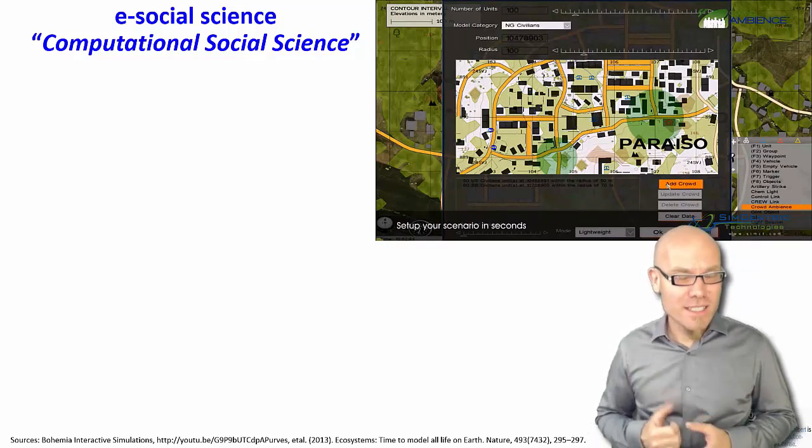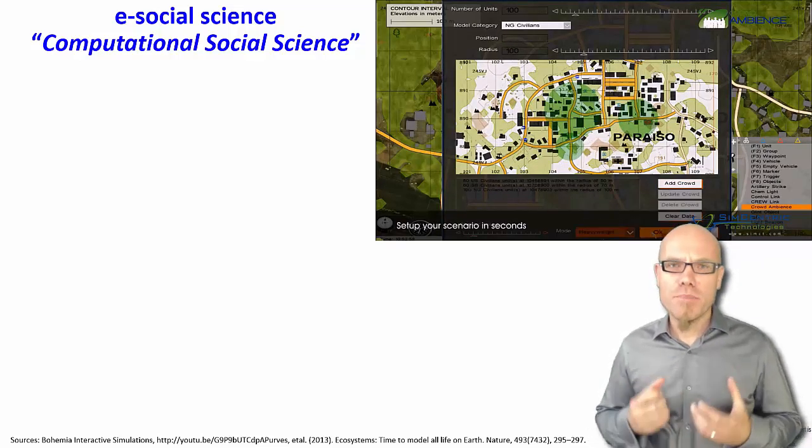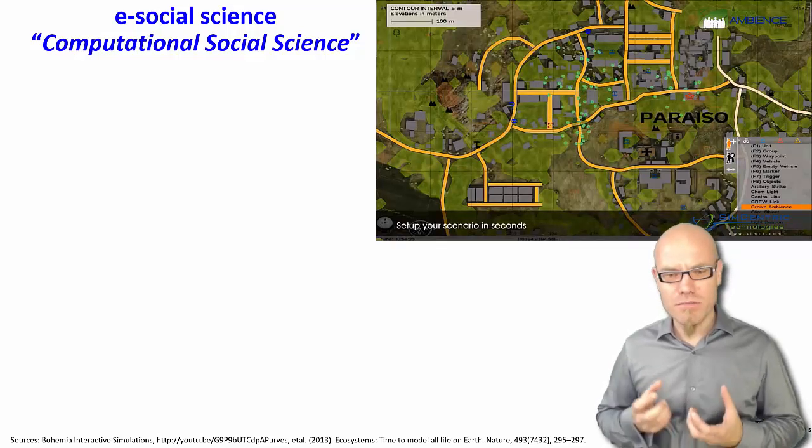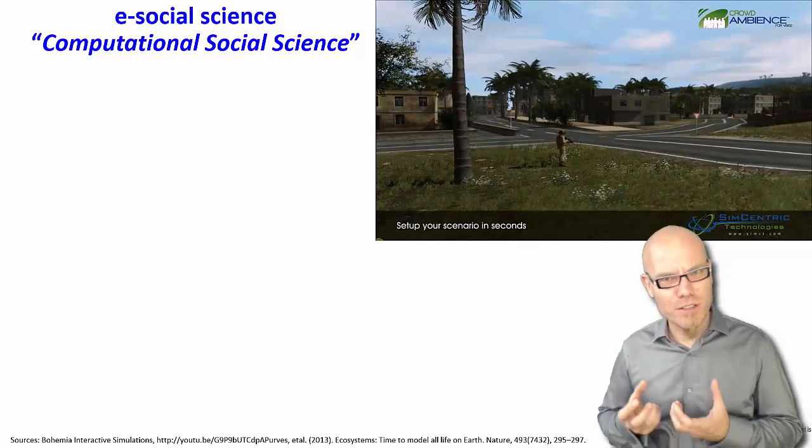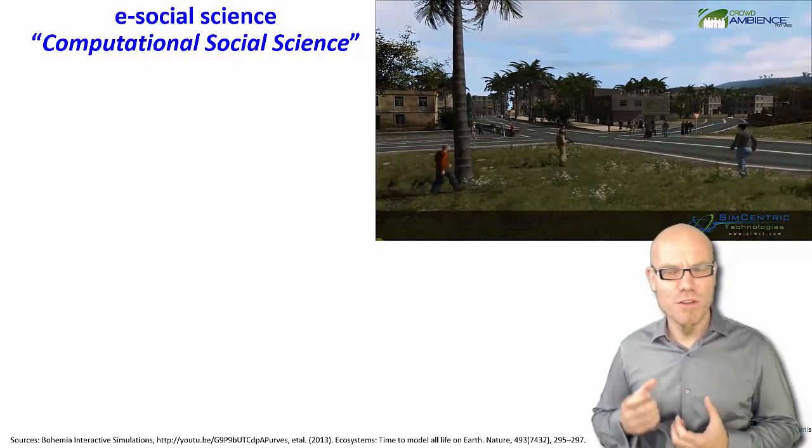For example, what you're seeing here is a real world simulation from the United States military where empirical data was used about the movement of people, of citizens in this foreign country, about the placement of soldiers, about their shifts.